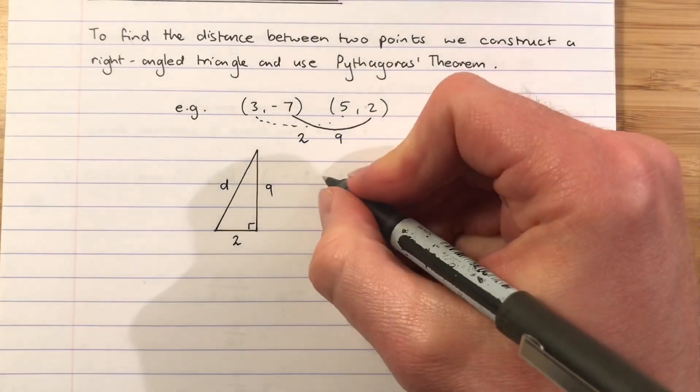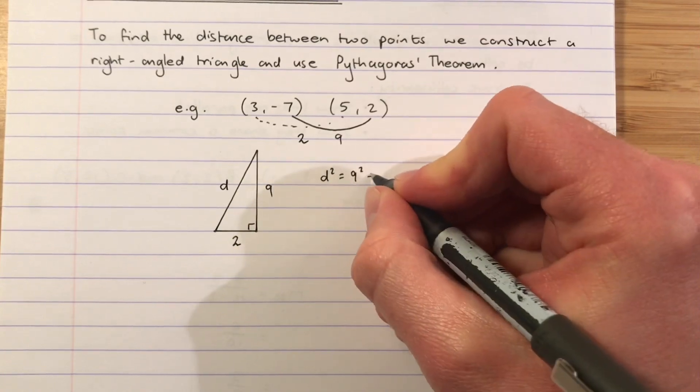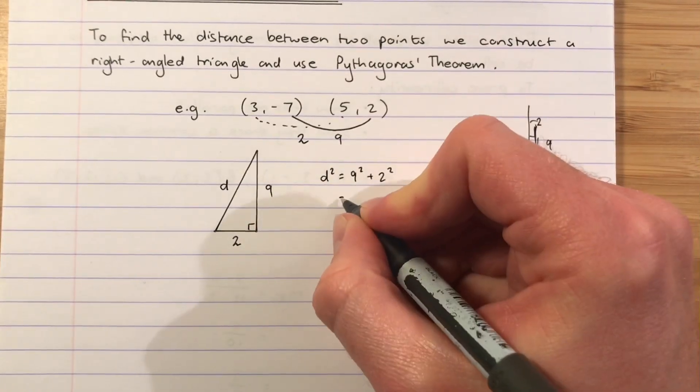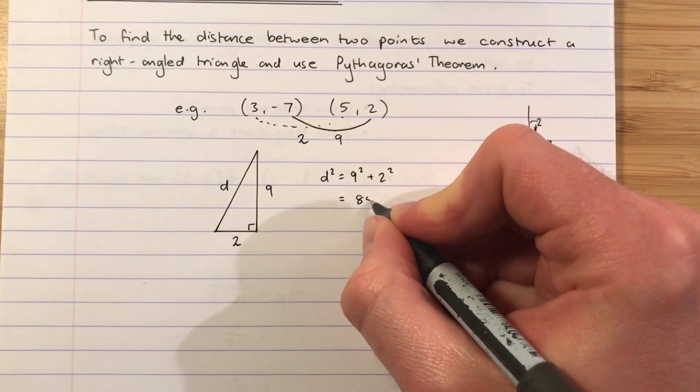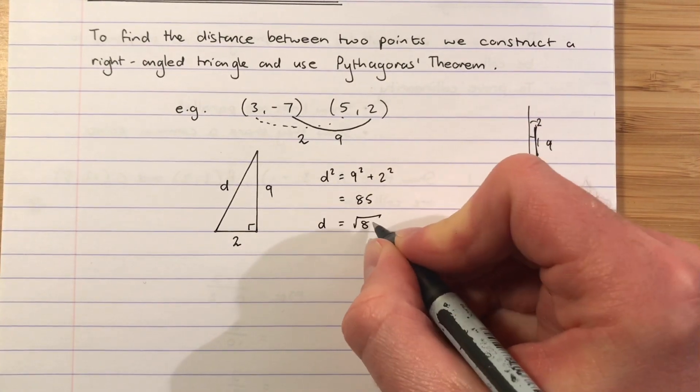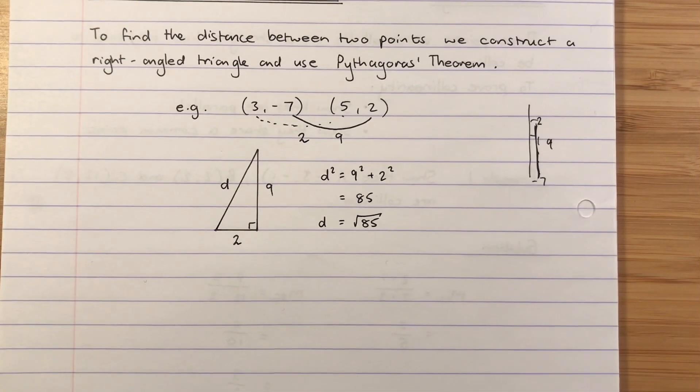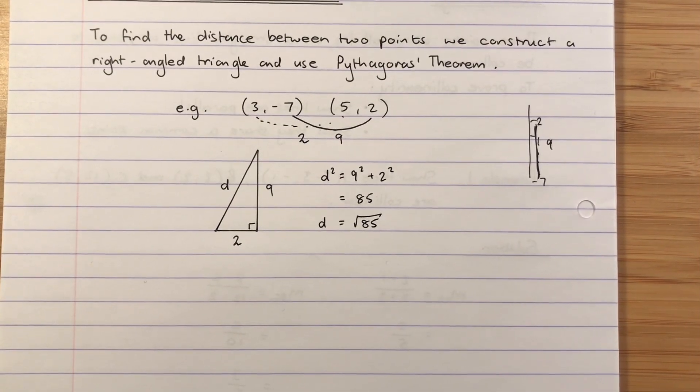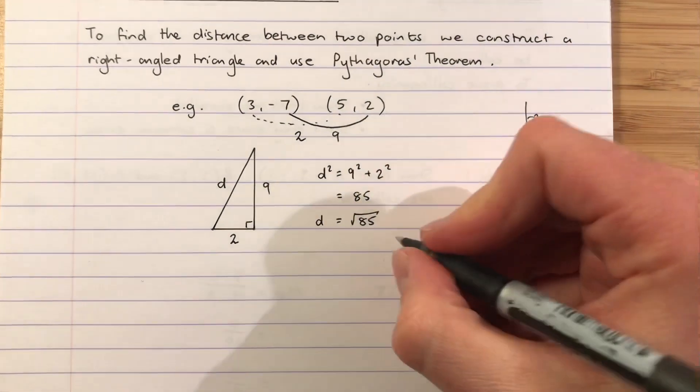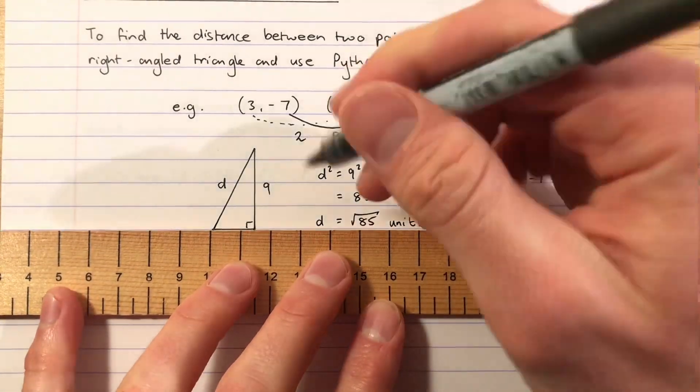So to find the distance between those two points, I am going to write d squared equals 9 squared add 2 squared, 81 add 4 which is 85. So the distance will be root 85. Now root 85 is not one that simplifies. You do have the option to simplify it down to 9.2 units if you've got a calculator, but I'm quite happy with it to be root 85 units as an exact value.